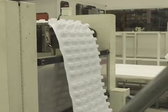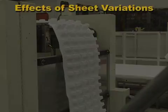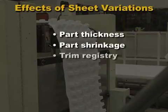Any significant variations in sheet thickness will cause variation in part thickness, part shrinkage, and trim registry.